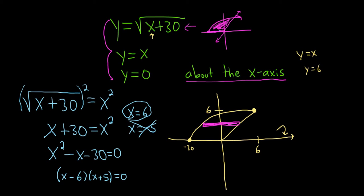So because we have a horizontal rectangle, we have functions of y. So we have to take this function of x, y equals the square root of x plus 30, and solve it for x. So we'll square both sides. So you get y squared equals x plus 30. And then subtracting 30, it's going to give us x equals y squared minus 30. So this is a function of y. So that's this function up here. This is x equals y squared minus 30.